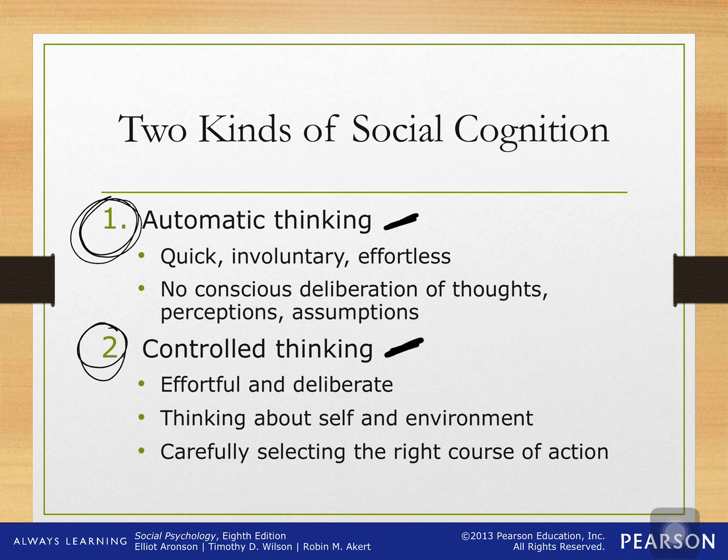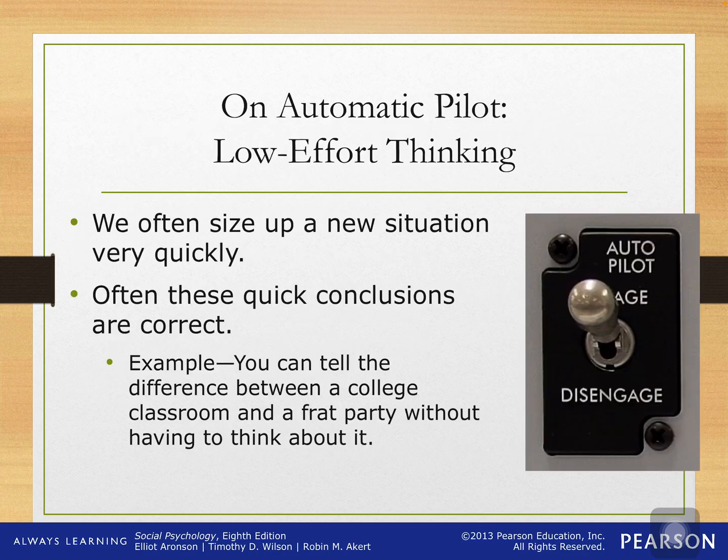These two kinds of thinking don't necessarily occur separately from each other. We engage in automatic and controlled thinking together all of the time. We have some element of autopilot on, and we always have some element of controlled thinking. But the idea is that we don't have to engage in controlled thinking for every single little tiny thing.